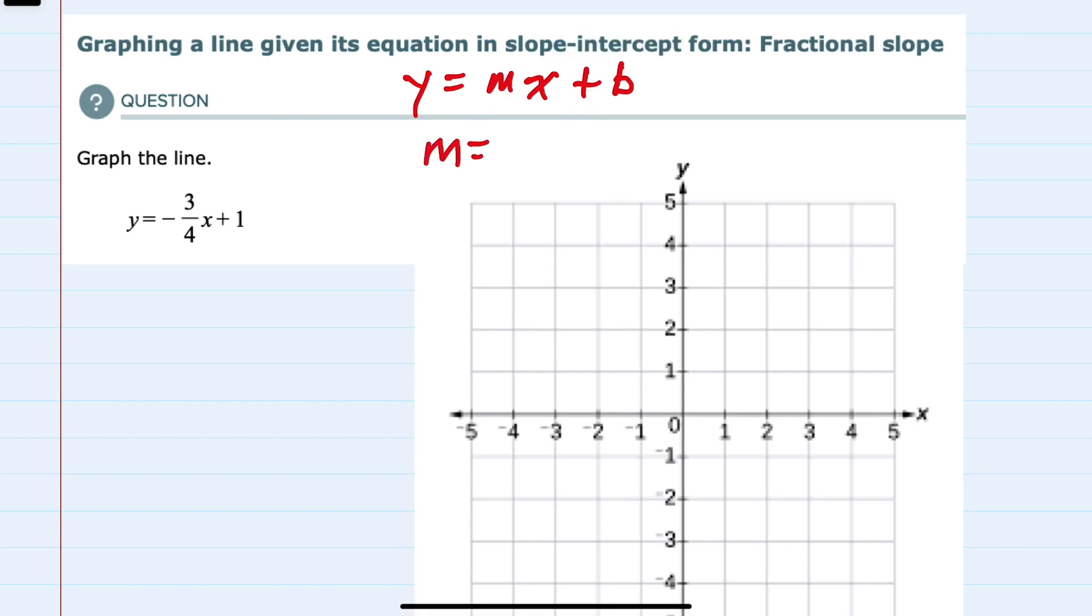And also, that m, our slope, can be thought of as rise over run, or the movement up and down over the movement left and right.